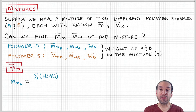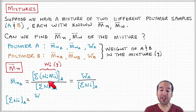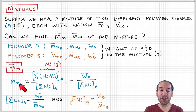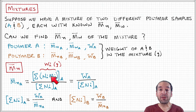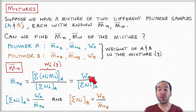Let's think about this first in terms of the number average molecular weight. The expression for number average molecular weight is the sum of the number of each fraction times the molecular weight of that fraction, divided by the total number of molecules. For polymer A, we add up all these individual fractions. Notice that the product N times M equals weight, because moles times grams per mole is grams. So adding this up over the total distribution of chain lengths in sample A, the quantity in the numerator is actually the weight of polymer in sample A.